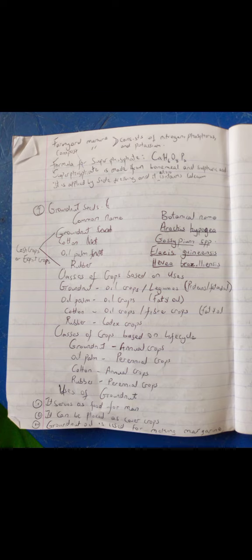Look at the botanical names for groundnut seeds, cotton, oil palm fruits, and rubber. Classes of crops based on uses include: groundnut as oil crops, legumes; oil palm as oil crops; cotton as oil crops; and rubber as latex crops.